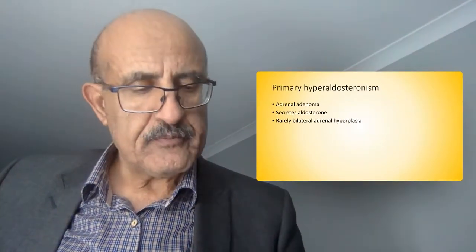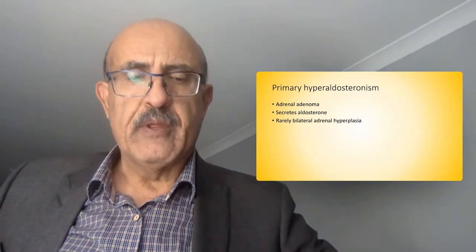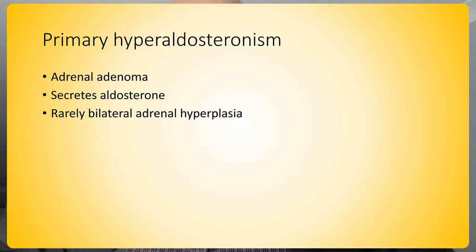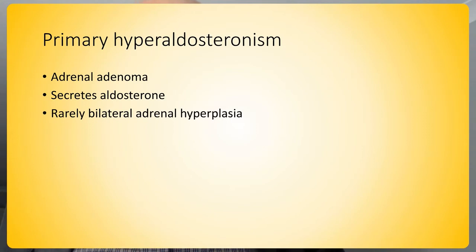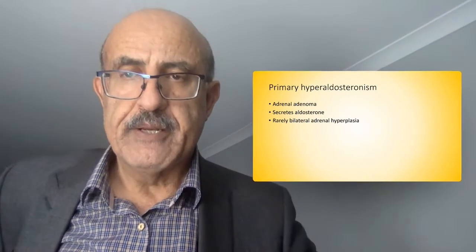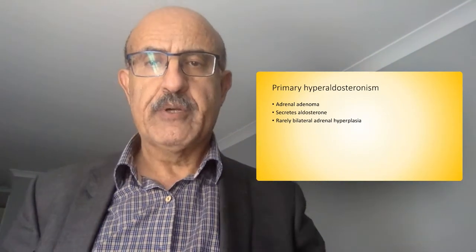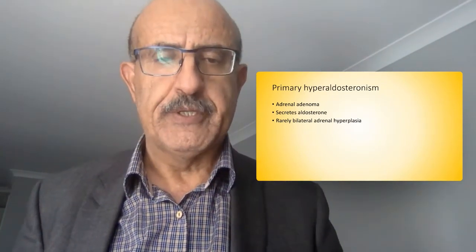If we have hyperaldosteronism on a blood test and find high levels of aldosterone in the plasma, that could be caused either by a secreting adrenal adenoma — a functioning adenoma in the adrenal cortex — which is relatively common and secretes aldosterone, resulting in hypokalemia and high blood pressure. Rarely, this could result from bilateral adrenal hyperplasia, which is more difficult to treat than a single adenoma, but it's rare and won't be the focus today.